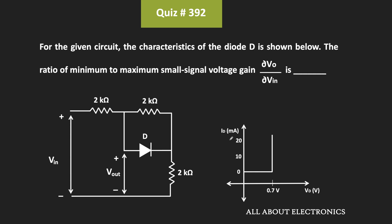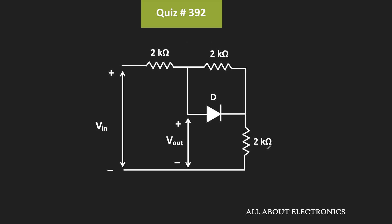First of all, let us understand the question. In this circuit, we have been already given the characteristic of this diode. If you see the characteristic, this diode will act as an open circuit until the voltage across it is equal to 0.7V. After that, it will act as a voltage source of 0.7V. Now in this circuit, the input could contain two terms: the DC term and the AC term, where the AC term is the small signal term. So we can say that this input is equal to VDC